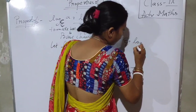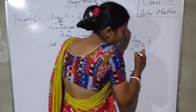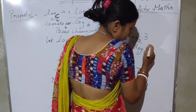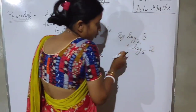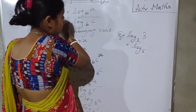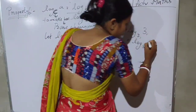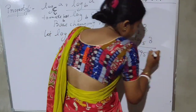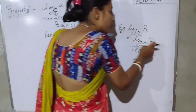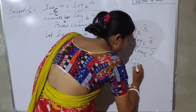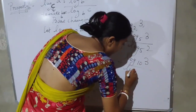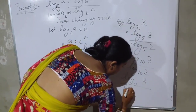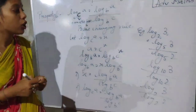For example, log 3 base 2 — suppose I want to make the base 5. The number we are taking log of, which is 3, goes in the numerator, and the old base 2 goes in the denominator, both with the new base 5. So, log 3 base 2 equals log 3 base 5 divided by log 2 base 5. Similarly, it could be log 3 base 10 divided by log 2 base 10. This is the base changing rule.